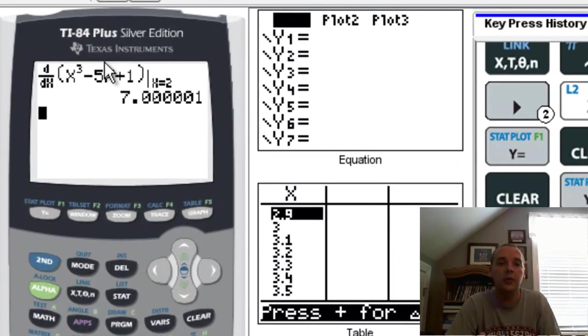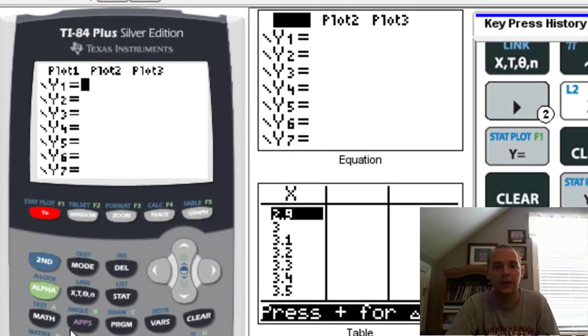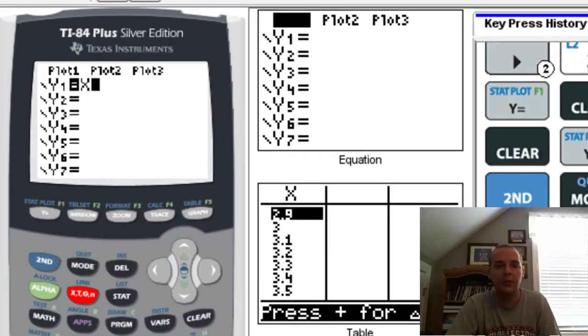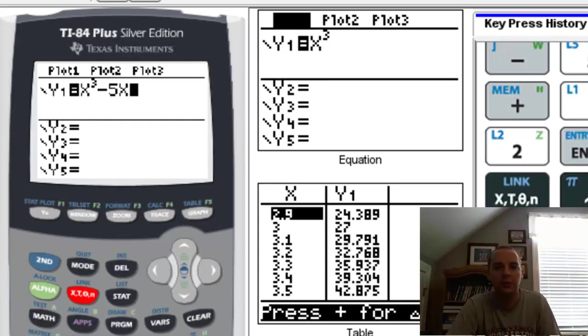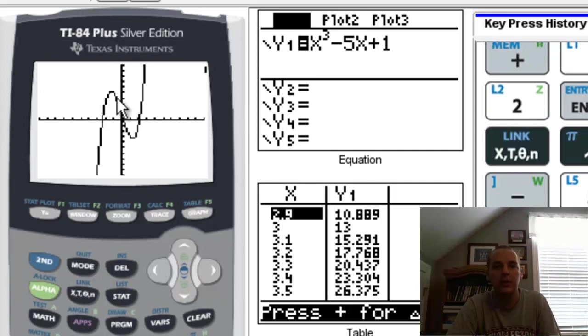But there's another way to do it on your TI-84 as well. What you can also do is go to the y equals screen and graph the curve, so we'll graph x cubed, minus 5x, plus 1, we'll graph that. So here's the graph of f of x right here, now if I want the slope at 2, here's what I have to do.